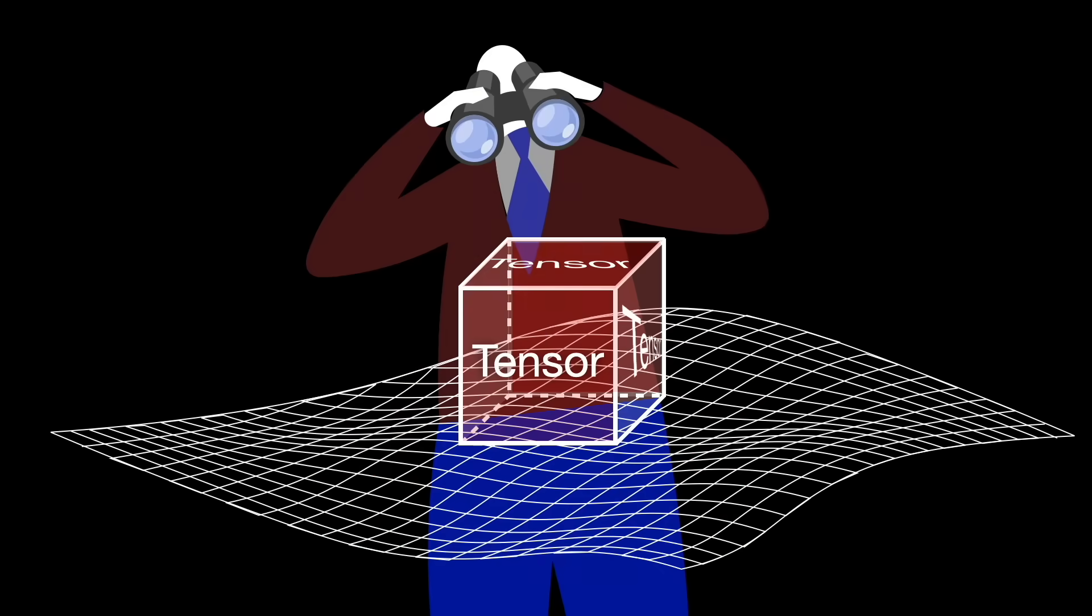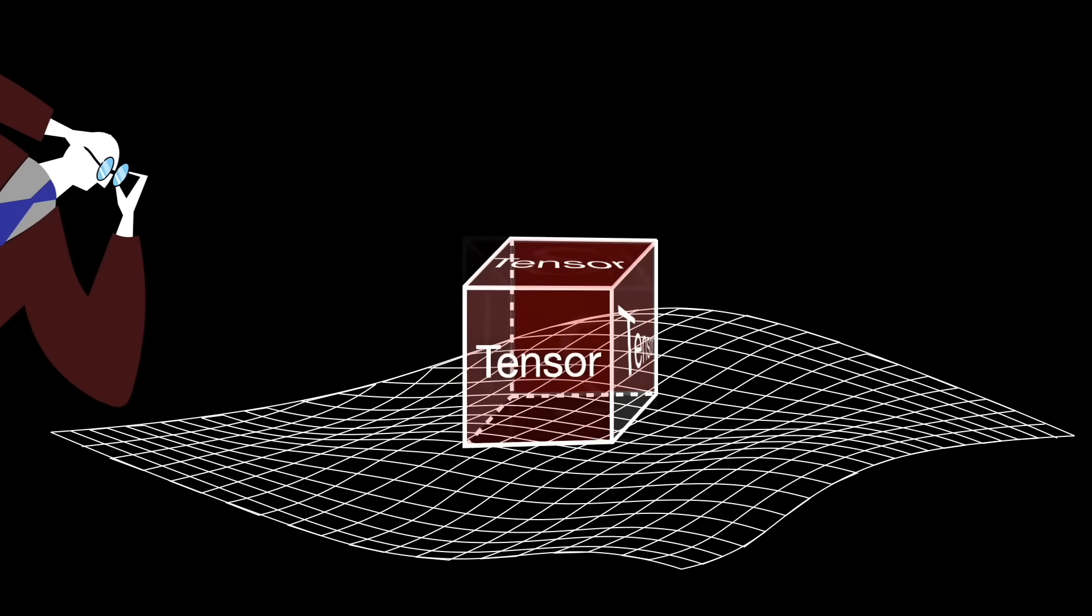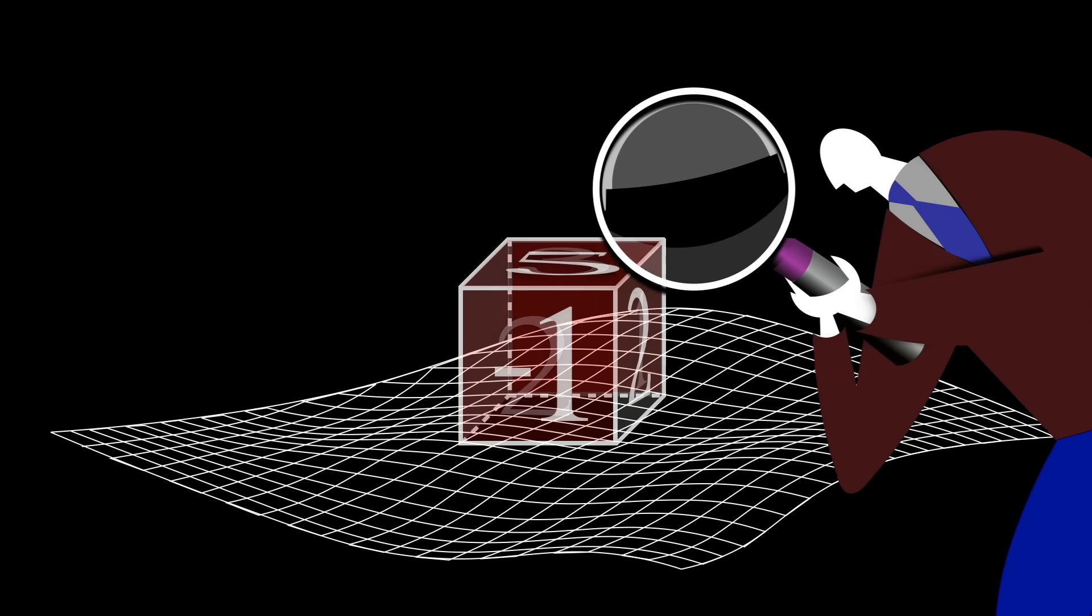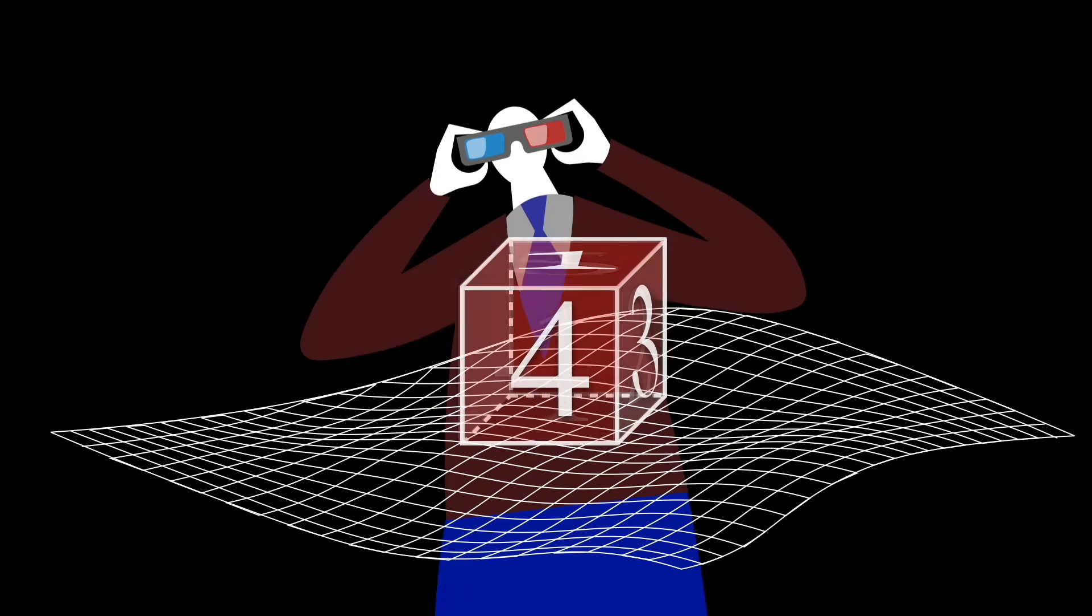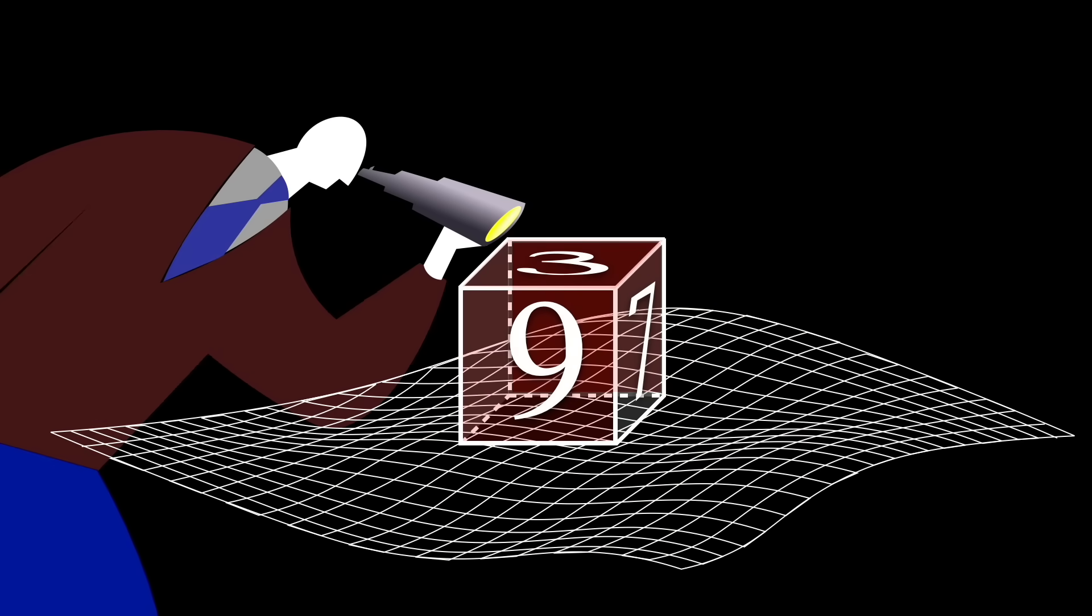Think of a tensor as something whose values may change, but its meaning doesn't, no matter which coordinate system you are using.